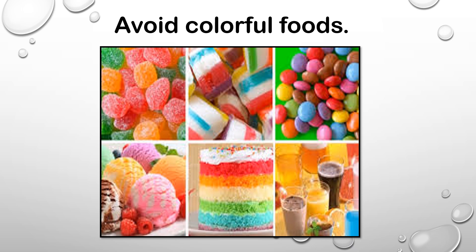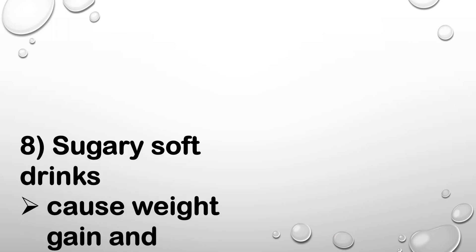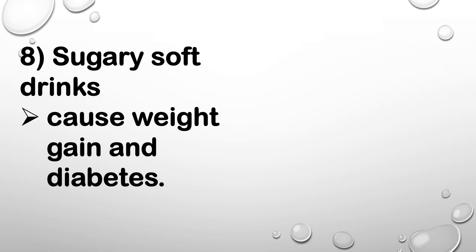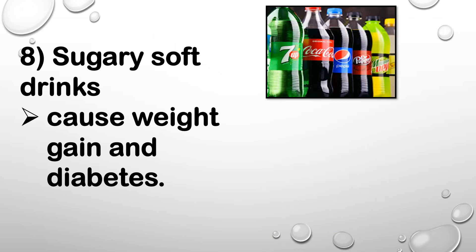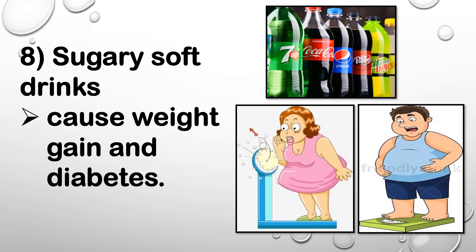Avoid colorful foods like ice creams and candies. We also have different kinds of drinks that are very colorful and not good for our health, so you need to avoid these colorful foods. Number eight, sugary soft drinks cause weight gain and diabetes. Examples of sugary soft drinks include 7UP, Coca-Cola, Pepsi, and many more.